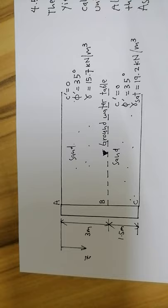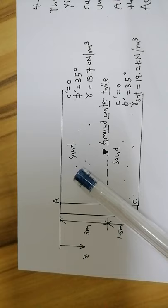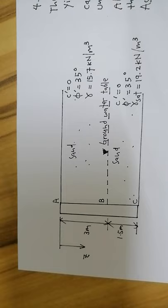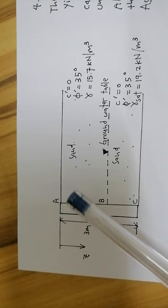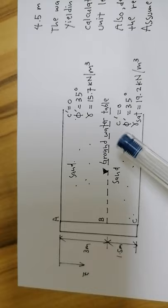This is example 13.1 from the book. As you can see, this is a retaining wall with a total height of 4.5 meters, supporting a soil mass with two layers — both are sand but with different unit weights. We also have the groundwater table at z equals 3 meters from the ground surface.